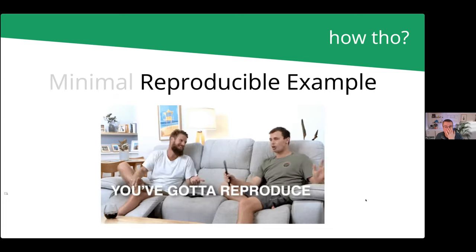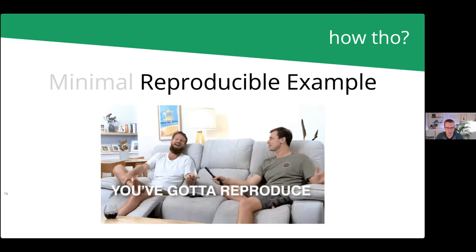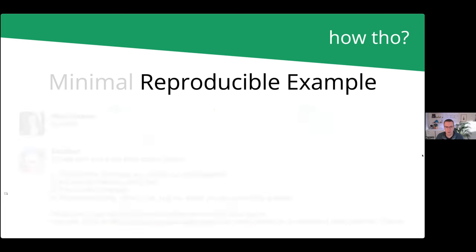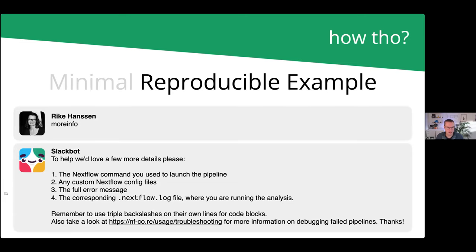Now, this is knowing what information to provide so that other people can reproduce those errors is somewhat of a skill itself. For those of us who spend a lot of time in the NFCore Slack and Nextflow Slack, we're very familiar with this to the extent that we actually have an automated Slack bot responder. If anyone types more info without a space, you get a little autoresponder saying, okay, this is the information we need to be able to help you. We need to know what the command was, any config files, the full error message and the log file.